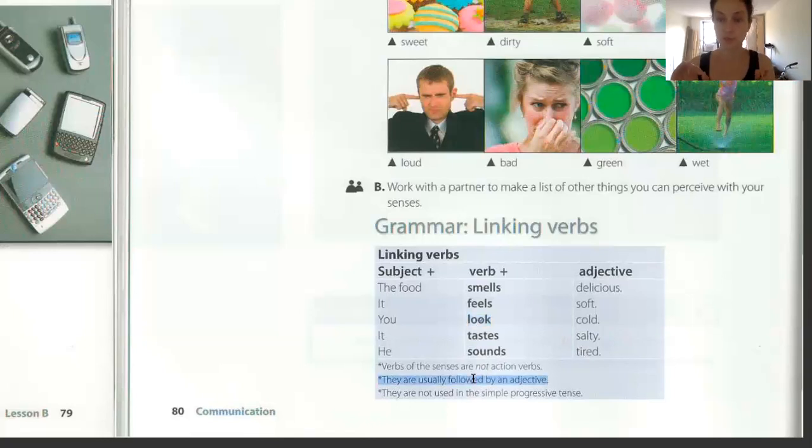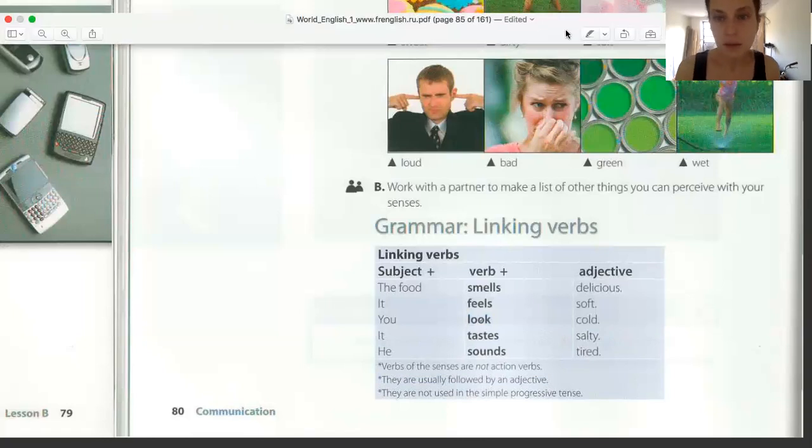These verbs are usually followed by an adjective. Here we go. We have the object. We have the verb. And then we have an adjective that describes the object. The subject of the sentence. Okay.